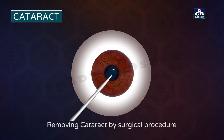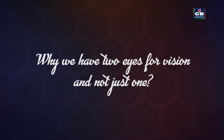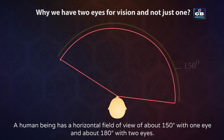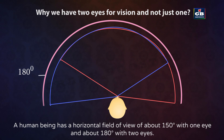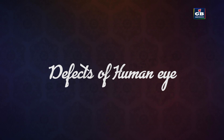Why do we have two eyes for vision and not just one? A human being has a horizontal field of view of about 150 degrees with one eye and about 180 degrees with two eyes. Faint objects cannot be seen properly with a single eye, so we need a pair of eyes for proper vision.